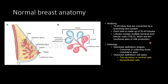Histologically speaking, we're going to be looking at glandular epithelium with varying shapes and a few different cell types. The shape is going to be columnar in the collecting ducts, gradually decreasing in size and becoming more cuboidal in the acini. The cell types include secretory luminal epithelial cells and myoepithelial cells surrounding them, helping to push out any proteinaceous material produced.